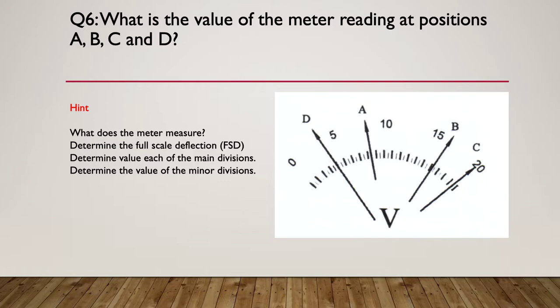Here's our hint. So what does the meter measure? What units is it measuring? Determine the full scale deflection, the FSD. Determine the value of each of the main divisions. And then determine the value of the minor divisions. And then you can use those to determine what positions A, B, C and D represent.